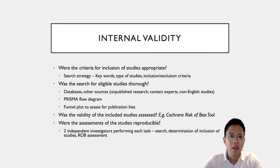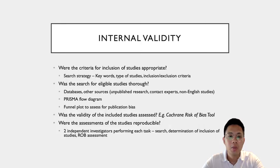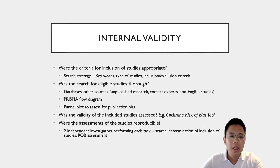A funnel plot is oftentimes presented, and this is a useful tool to assess whether or not there's a possibility of publication bias. The third step is to look at whether or not the validity of the included studies was assessed. For example, for RCTs, this may include the use of a Cochrane risk of bias tool, where based on different parameters the included studies are assessed on their validity across different criteria. Finally, when we look at whether or not the process was reproducible, we want to see at least two independent investigators performing each task, from the search to the determination of inclusion of studies and the risk of bias assessment.